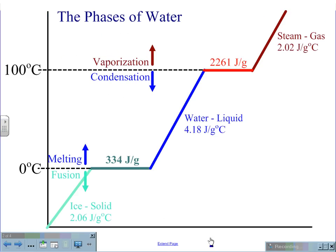We understand that water has three separate phases: solid, liquid, and gas. It is a solid below 0 degrees Celsius and has a specific heat capacity at this point of 2.06 joules per grams degrees Celsius.